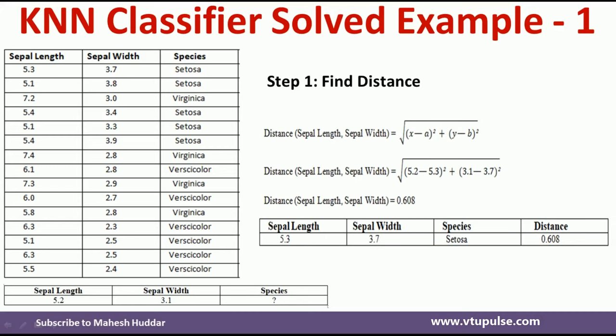For example, to calculate the distance from the new example to the first example, the formula is: distance = √((x − a)² + (y − b)²), where x is the sepal length of the new example, a is the sepal length of the first example, y is the sepal width of the new example, and b is the sepal width of the first example. Substituting values: √((5.2 − 5.3)² + (3.1 − 3.7)²) = 0.608. So the distance from the new example to the first example is 0.608.